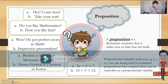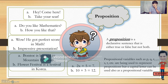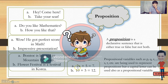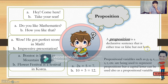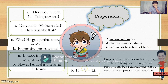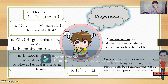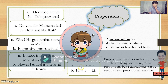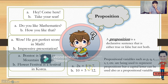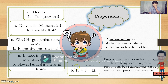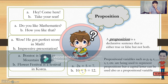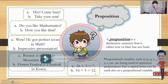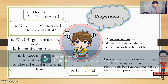Let's have these mathematical sentences. "2x plus 5 is equal to 7" — is this a proposition? Is this answerable by true or false? The answer is no — this is not a proposition because the value of x may vary. The second one is "10 plus 5 is equal to 12" — this is a proposition. It is a false proposition because 10 plus 5 is not 12. So that ends our lesson about proposition.